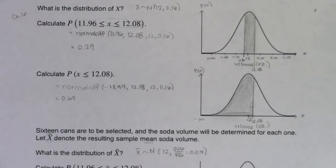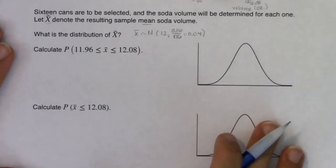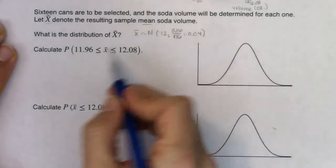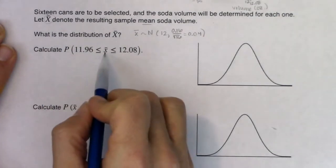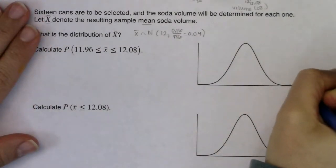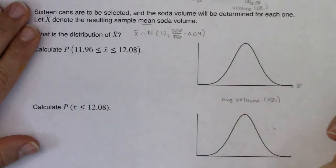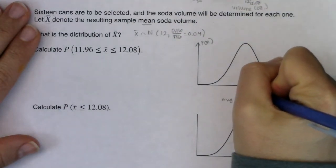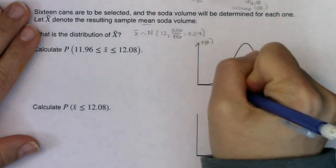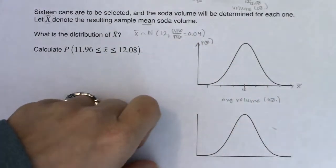Since the N is here, I can continue to use normal CDF. Let's calculate the same two probabilities but off of the sampling distribution. I still want the probability that the average of these 16 cans — the average volume — is between 11.96 and 12.08. Before I go calculate that number, let's mark up our x-bar axis. This is average volume; it's not just volume anymore — the unit's still the same, but we've got averages. I'm not jumping by 0.16s anymore; I'm jumping by 0.04s.